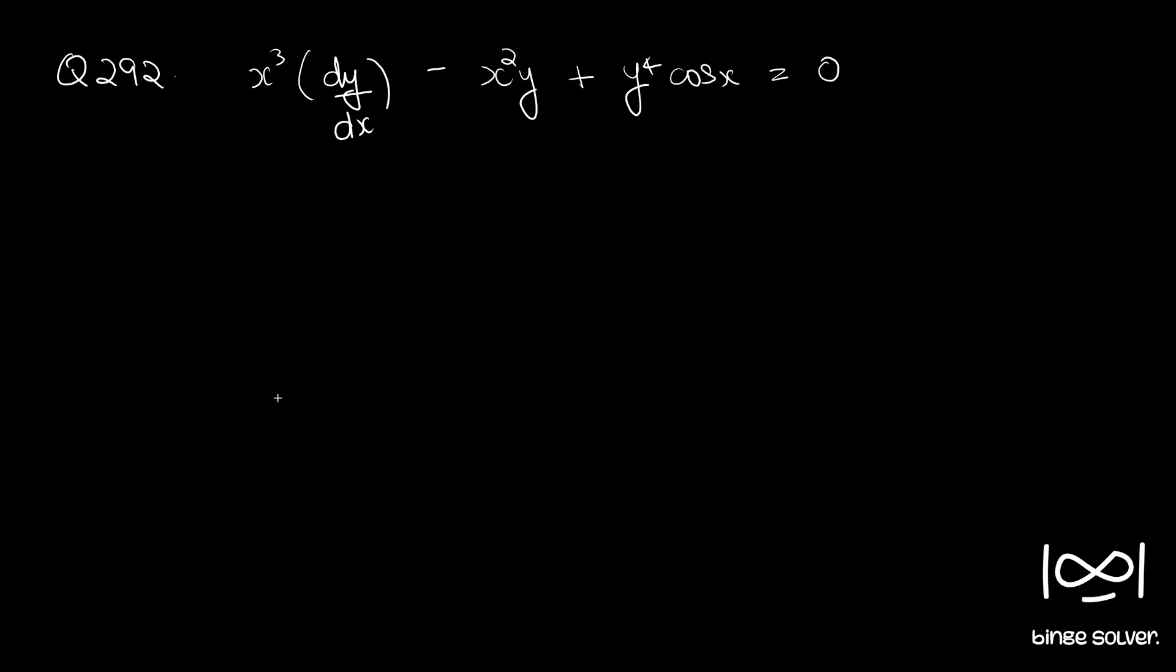We'll do some rearrangements. We will have x cubed dy by dx minus x squared y equal to minus y raised to 4 cos x.